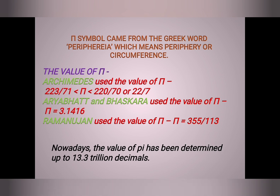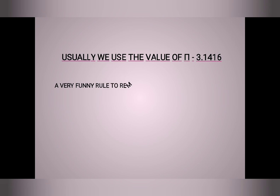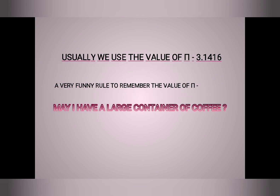Nowadays the value of pi has been determined up to 13.3 trillion decimals. Usually we use the value of pi which is equal to 3.1416. Here is a funny rule to remember the value of pi: 'May I have a large container of coffee?' The word 'May' has 3 letters, 'I' has 1 letter, 'have' has 4 letters, 'a' has 1 letter, 'large' has 5 letters, 'container' has 9 letters, 'of' has 2 letters, and 'coffee' has 6 letters.